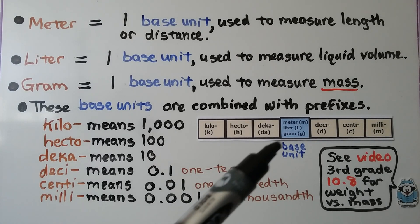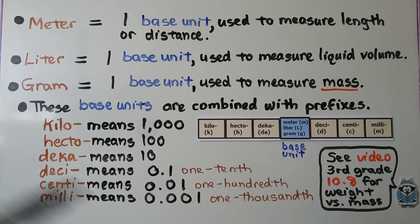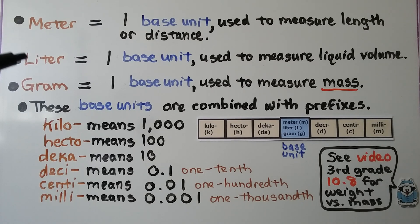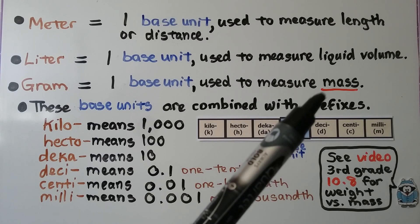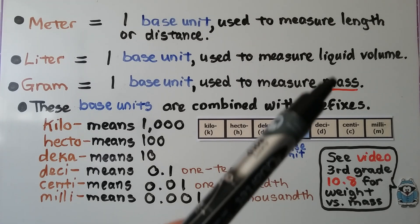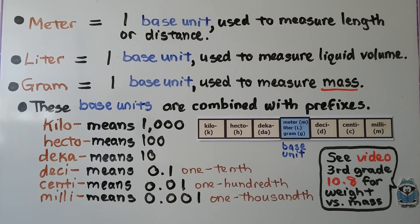Our base units are a meter, a liter, or a gram. The meter is one base unit used to measure length or distance. The liter is one base unit used to measure liquid volume. And the gram is one base unit used to measure mass. If you don't know the difference between weight and mass, there's a link to the video for third grade math 10.8 where we talked about the difference between weight and mass.